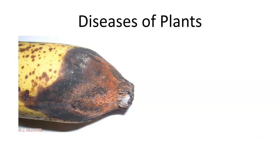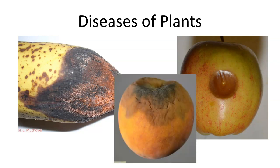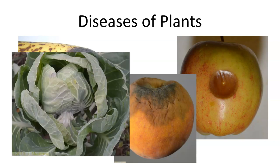We also have diseases of plants caused by fungi. On this banana, the little speckles are actually a fungal infection that starts when the banana is green and hard but doesn't show up until it begins to ripen. This apple has Penicillium on it and is watering down, becoming nasty. And this peach has a brown rot on it, which has made it quite non-appealing.